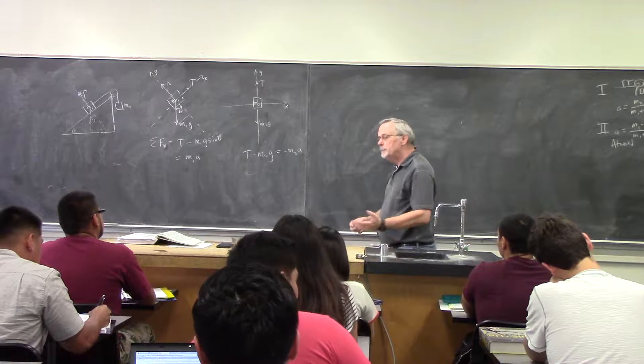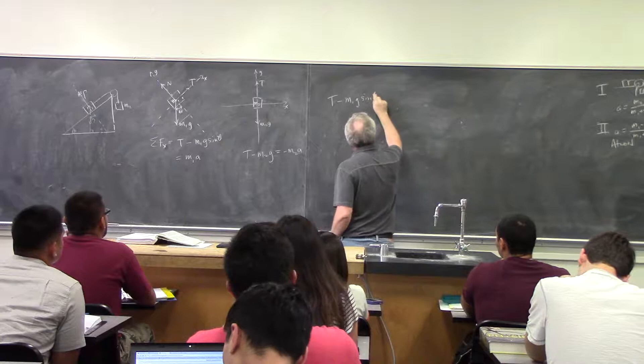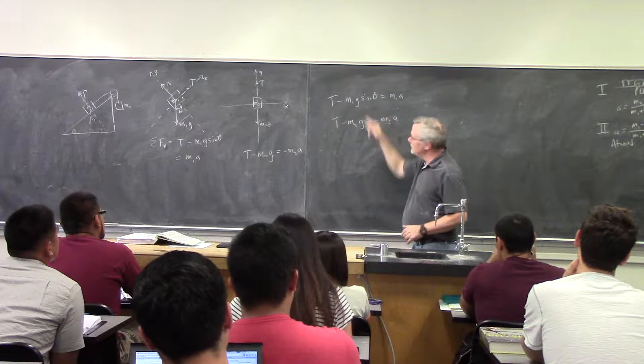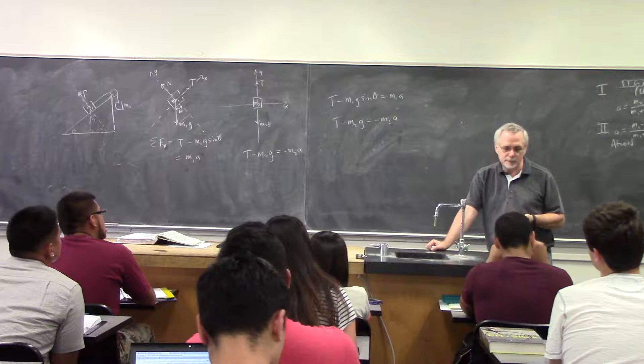It's not as simple as it was last time, but I have this equation: T minus m₁g sine theta equals m₁a, and T minus m₂g equals negative m₂a. I have a in both equations and T in both equations. In algebra, if you have two equations with two unknowns, we can solve. One way is by substitution, and one way is by simultaneous equations. Usually in physics, substitution is faster.